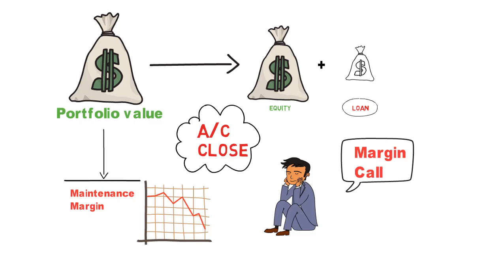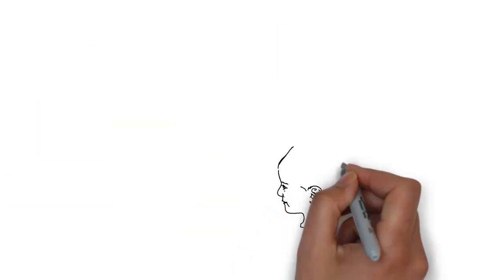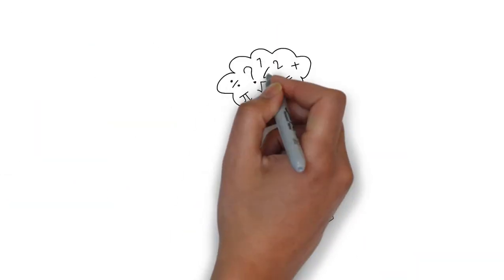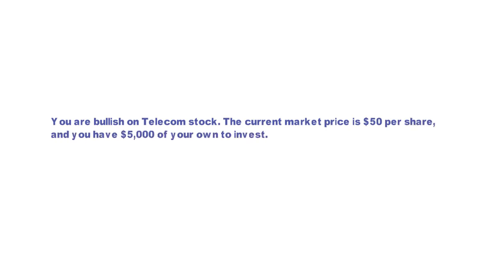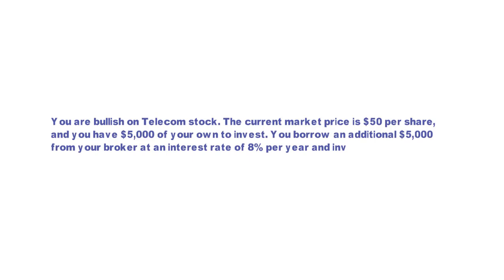Let's understand all these concepts with a simple numeric example. You are bullish on telecom stock. The current market price is $50 per share, and you have $5,000 of your own to invest. You borrow an additional $5,000 from your broker at an interest rate of 8% per year, and invest $10,000 in the stock.